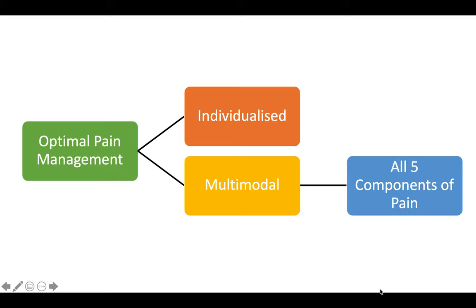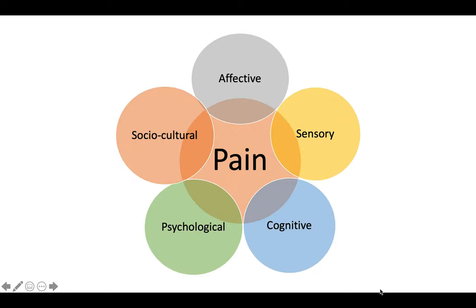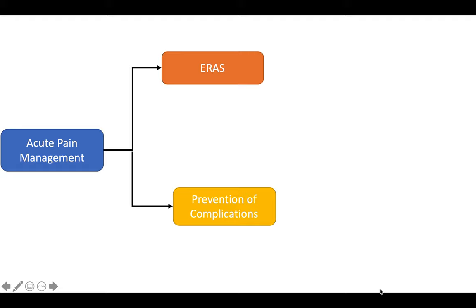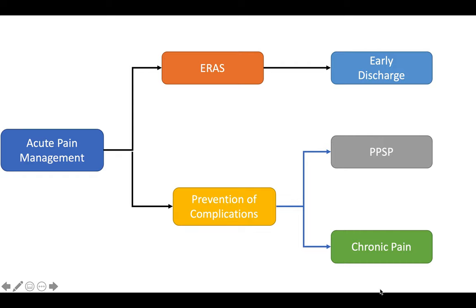Optimal pain management needs to be individualized and multimodal, including all five components of pain: sensory, cognitive, psychological, sociocultural, and affective components. When we talk about acute pain management, we are thinking of early recovery after surgery and prevention of complications. When we talk about ERAS, we are looking at discharging the patient early, whereas prevention of complications addresses persistent post-surgical pain and chronic pain.